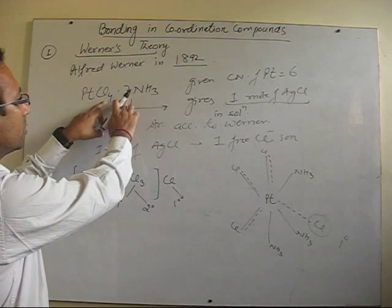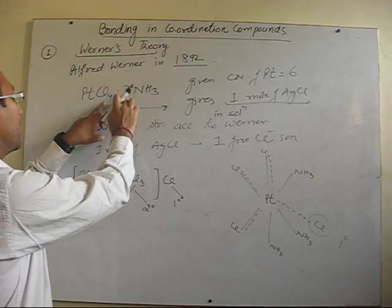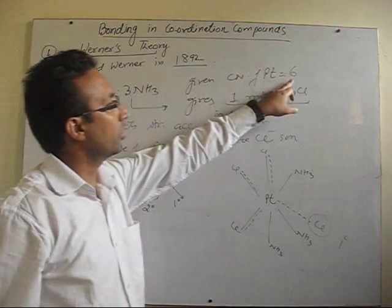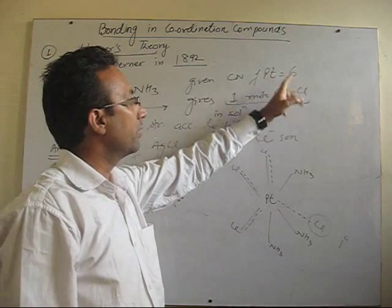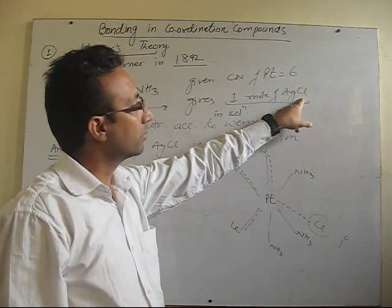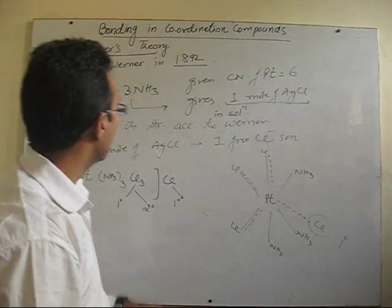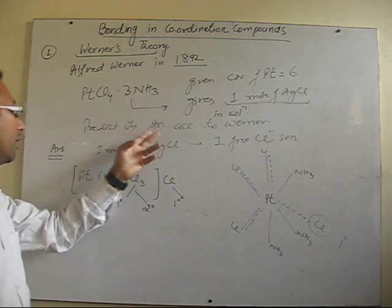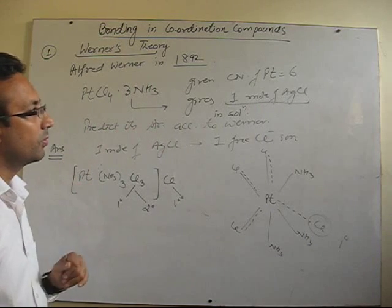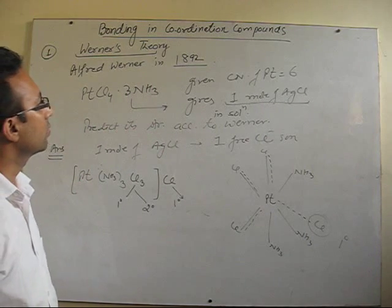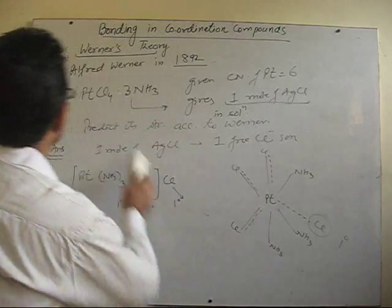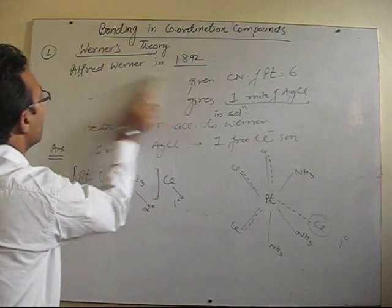Such problems can be asked in exams — they will change the composition. Suppose there are five ammonia, some different number of Cl, the coordination number will be given to you, the moles of AgCl are given, and you have to predict the structure of that compound. Such types of questions can be asked based on Werner's theory.